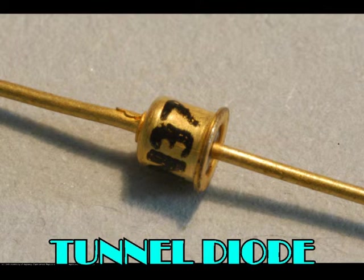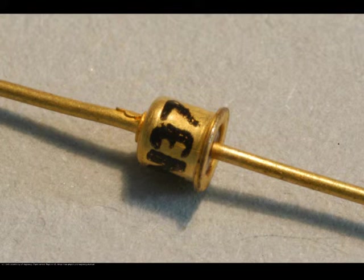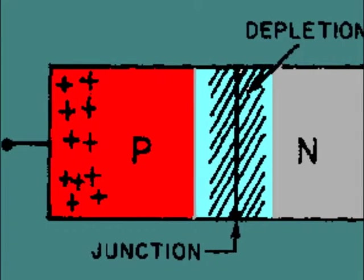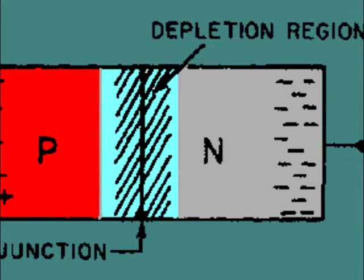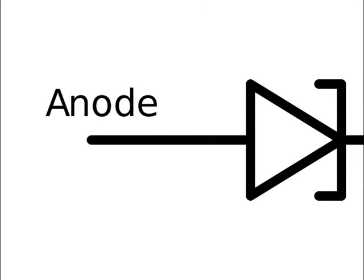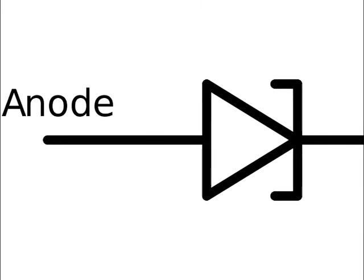The tunnel diode is a very fast diode which can operate well into the microwave radio frequency region. Unlike any other diode, the depletion layer in it is extremely narrow. It uses a quantum mechanical effect called tunneling.